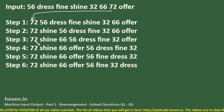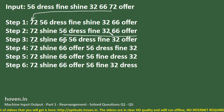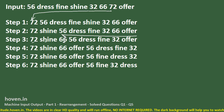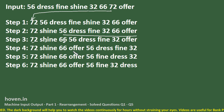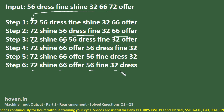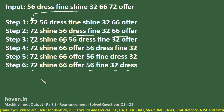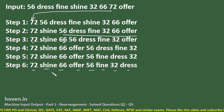In the third step, 66 — the largest among 32, 56, and 66 — has appeared after shine. Then 56, dress, fine, 32, offer remain the same. In the next step, offer — the last alphabetically among dress, fine, and offer — appears. This continues until the final step where 72, 66, 56, 32 are all in descending order, and shine, offer, fine, dress are also in descending alphabetical order.